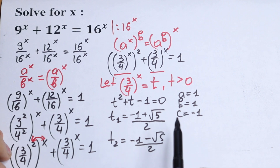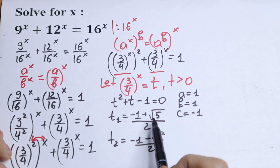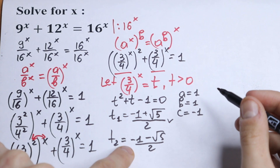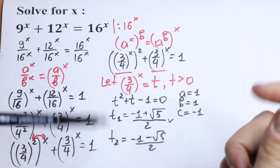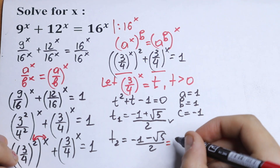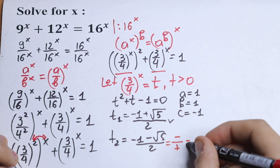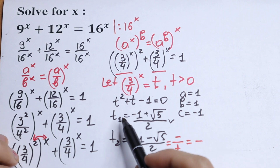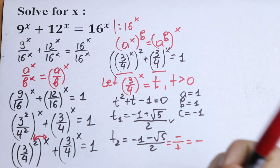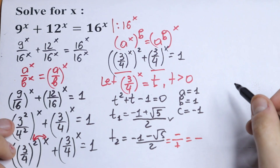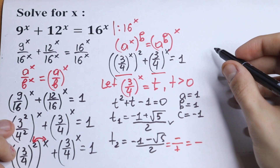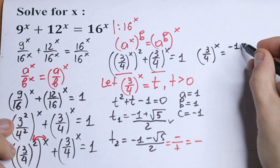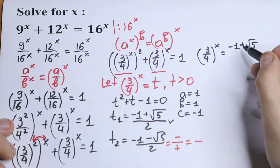For t1: square root of 5 minus 1 over 2 is greater than 0, because square root of 5 is greater than 2 — so this is a valid root. For t2: we have a minus sign in the numerator, making it negative, so t2 is rejected. The one and only valid root is t1 equal to minus 1 plus square root of 5 over 2. Returning to our substitution, we have 3 over 4 to the power x equal to minus 1 plus square root of 5 over 2.